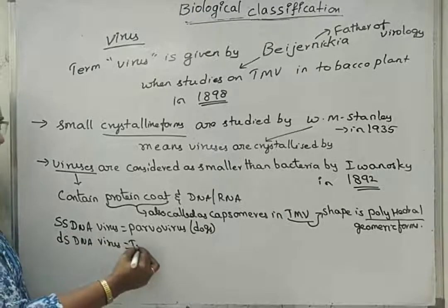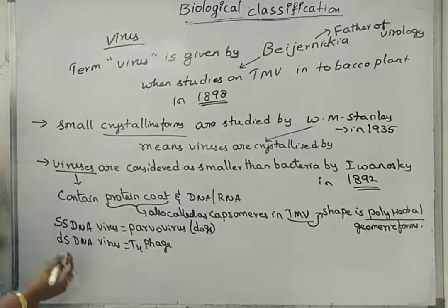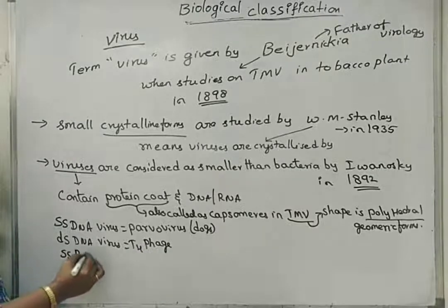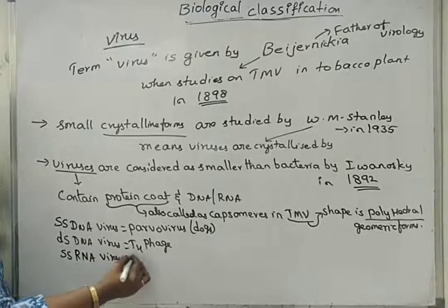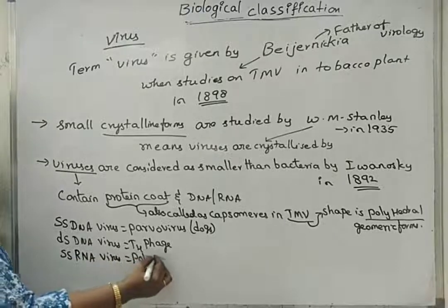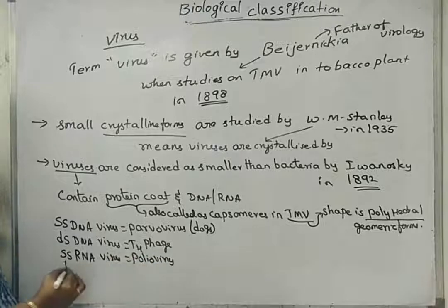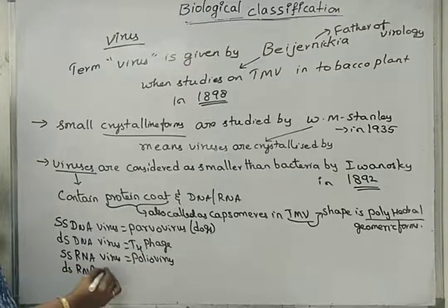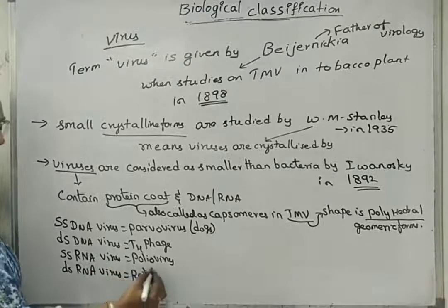Next, double-stranded DNA virus — example is T4 phage, that infects E. coli. Single-stranded RNA containing virus is poliovirus. Next, double-stranded RNA containing virus is rotavirus, which causes diarrhea-like symptoms.